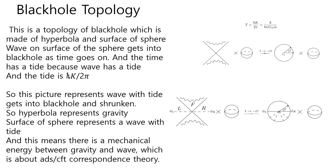Black hole topology. This is a topology of a black hole which is made of a hyperbola and the surface of a sphere. A wave on the surface of the sphere gets into the black hole as time goes on, and the time has a tide because the wave has a tide. The tide is h-bar k over 2 pi. This picture represents a wave with a tide getting into the black hole and being shrunken. The hyperbola represents gravity, the surface of the sphere represents a wave with a tide, and this means there is a mechanical energy between gravity and wave energy, which is about ADS-CFT Correspondence Theory.